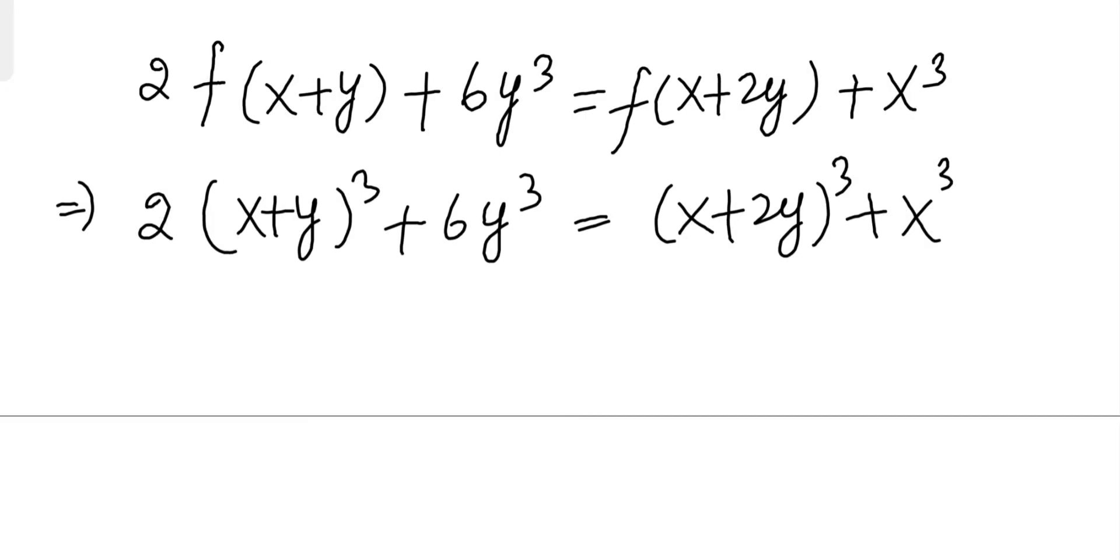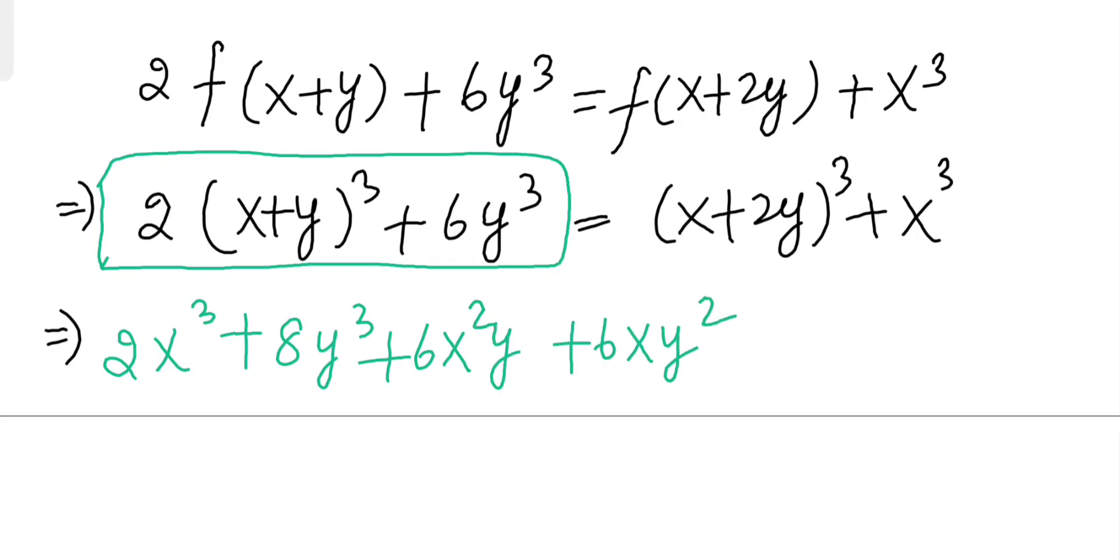Now if I try to simplify this, I'll get on LHS, this side, after simplifying: 2X³ plus 8Y³ plus 6X²Y plus 6XY². But when I'll try to simplify right hand side RHS, I'll get something like 2X³, 8Y³, 6X²Y plus 12XY².